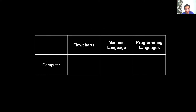Till now we were giving instructions in flowcharts, but flowcharts are not understood by the computer. The computer only understands machine language, which is in zeros and ones. The problem with machine language is that it is extremely difficult for humans to give instructions in it. Hence, we have something called a programming language.